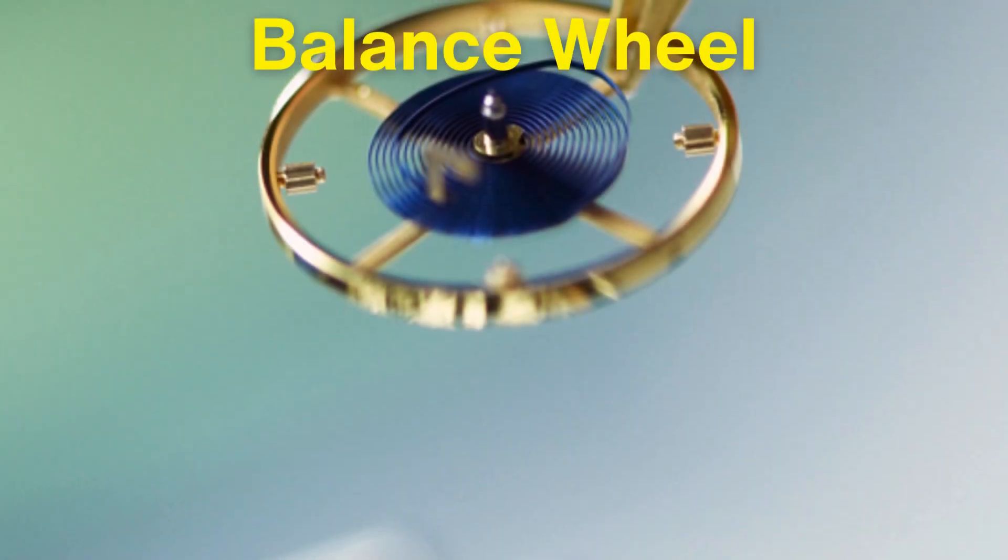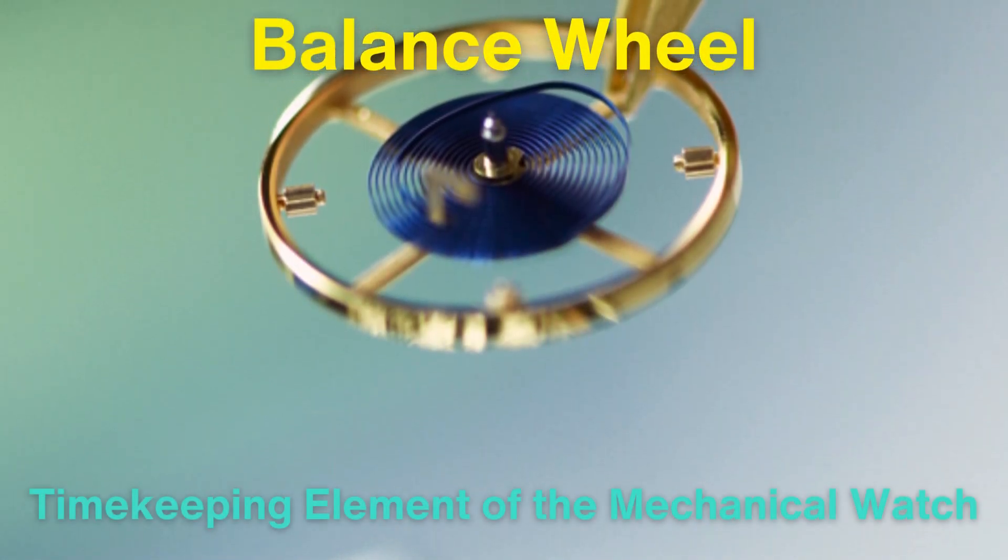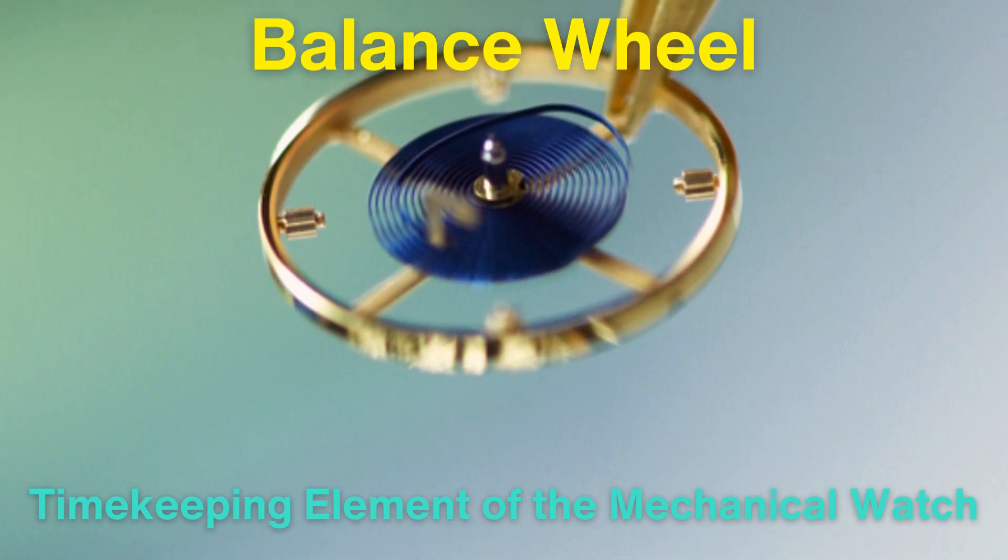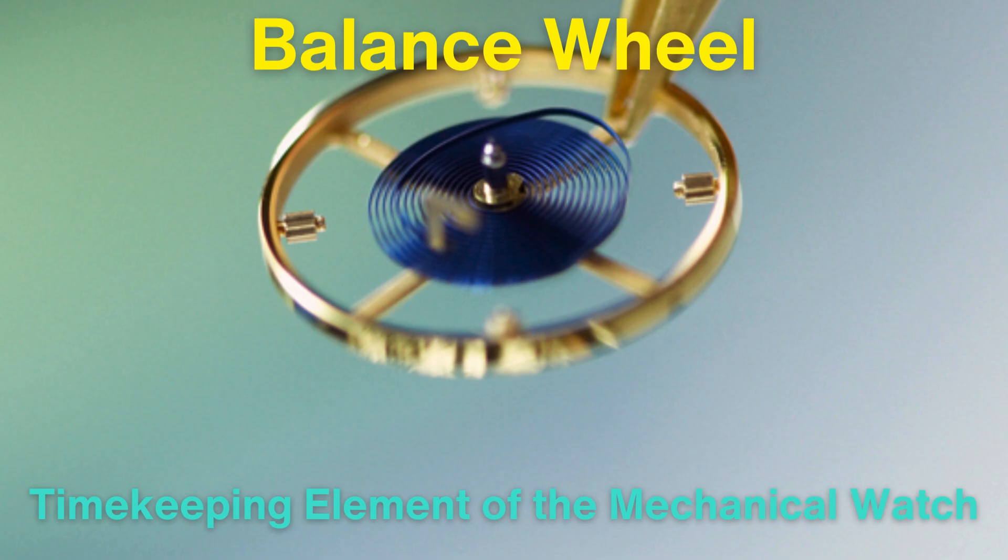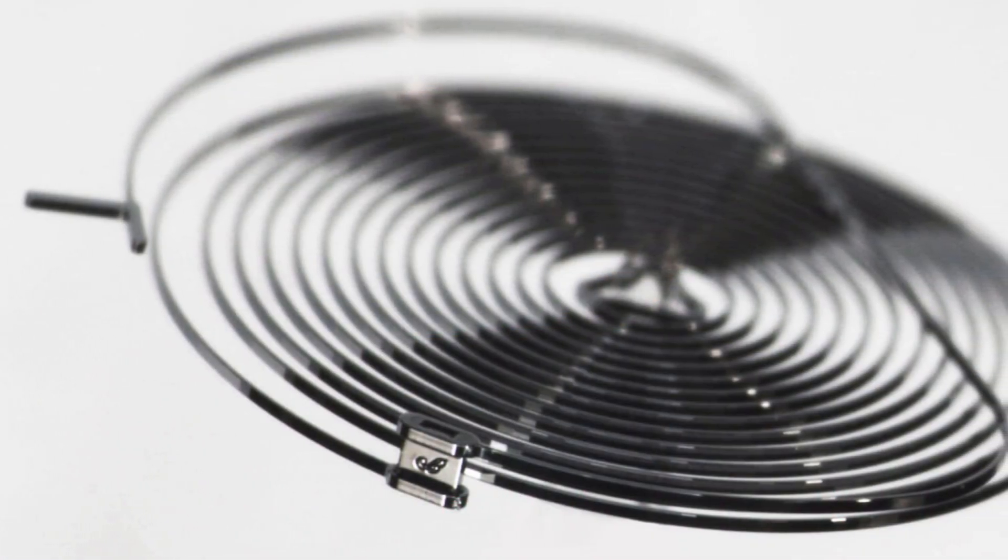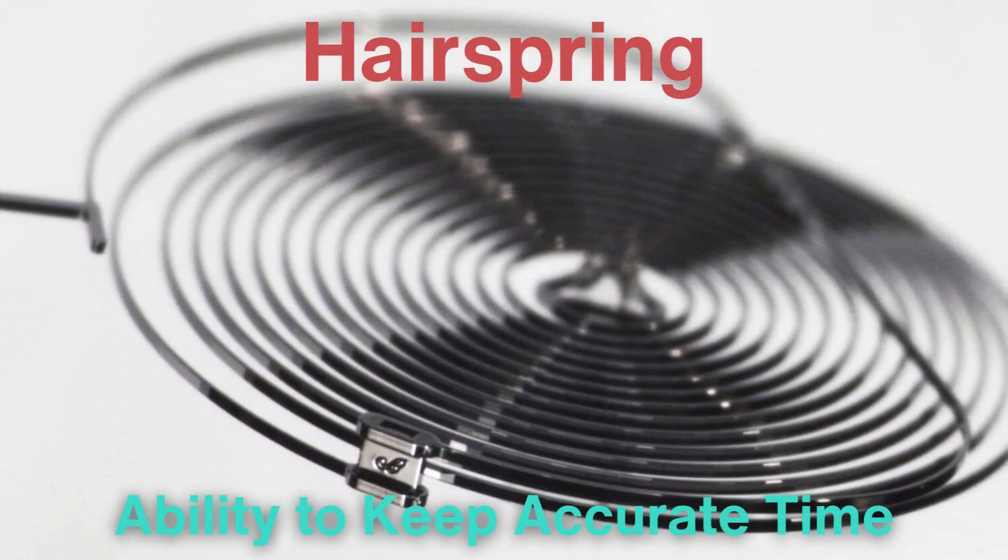The balance wheel is essentially the timekeeping element of the mechanical watch. It functions much like a pendulum in a traditional clock, oscillating back and forth at a constant rate. Attached to the balance wheel is a tiny, coiled spring known as the hairspring, which plays a vital role in the watch's ability to keep accurate time.